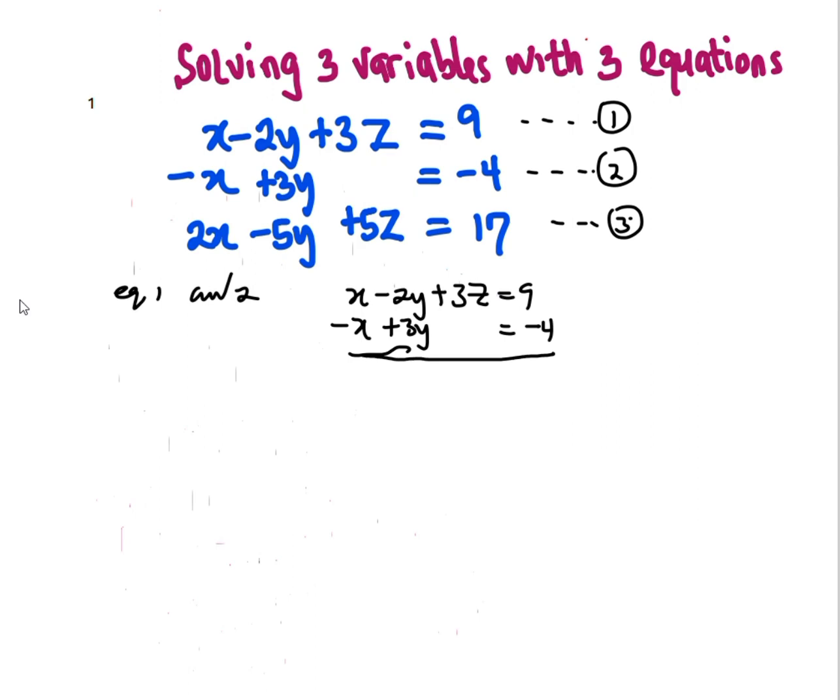So, x minus x is going to cancel out. Negative 2y plus 3y is going to give me y plus 3z equals 9 minus 4, which is going to give me 5. So, let's make this equation 4.